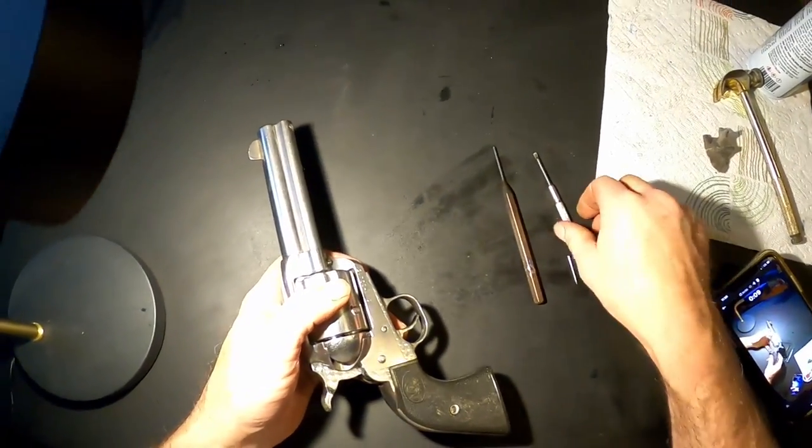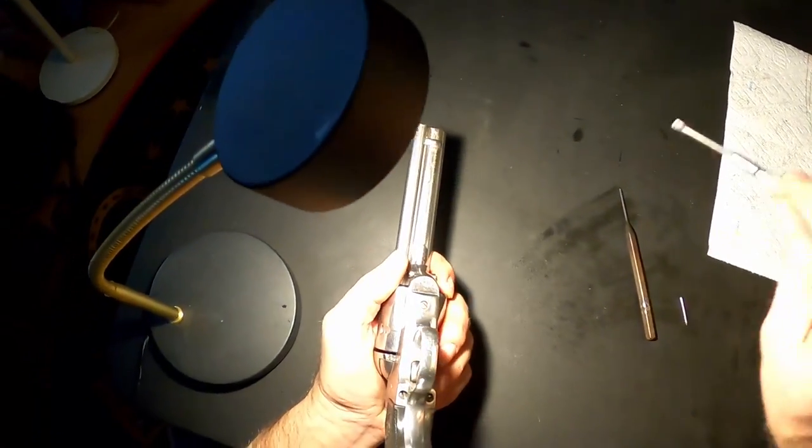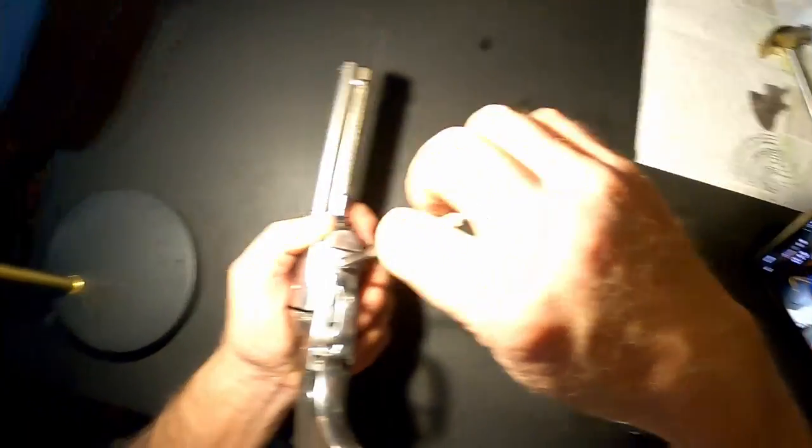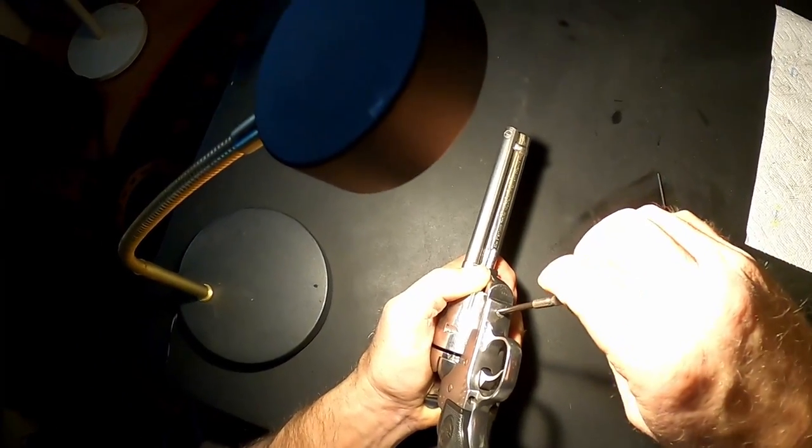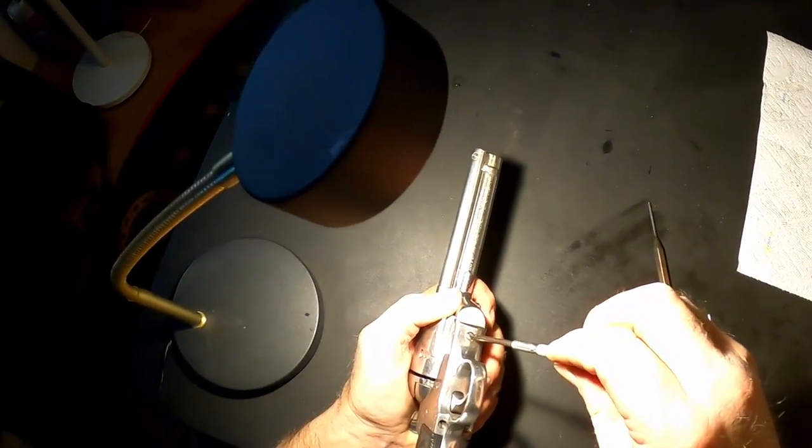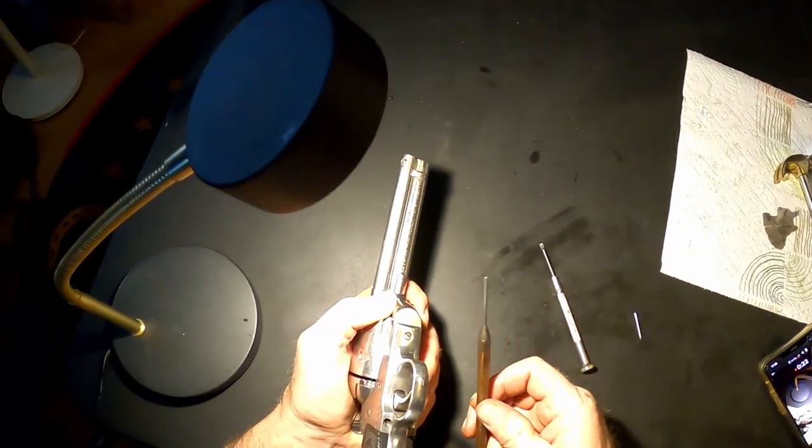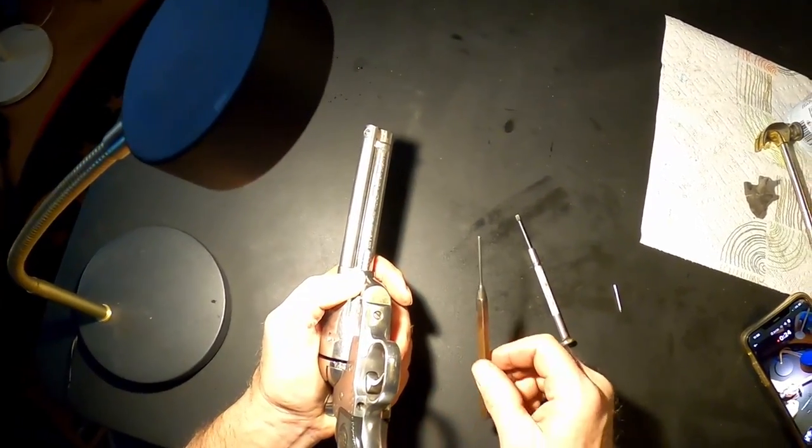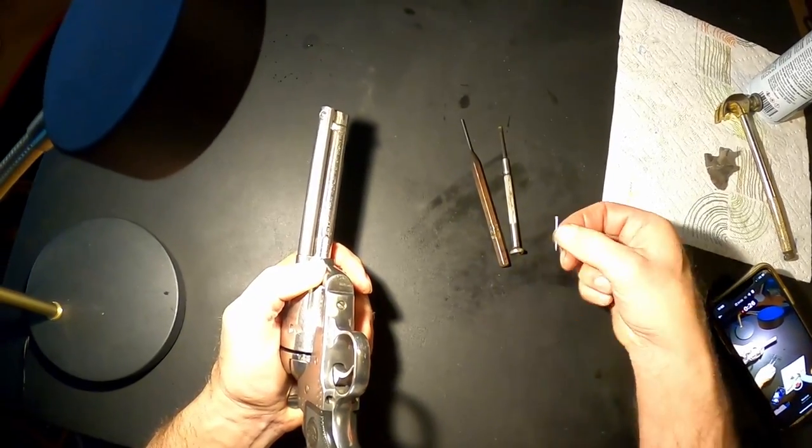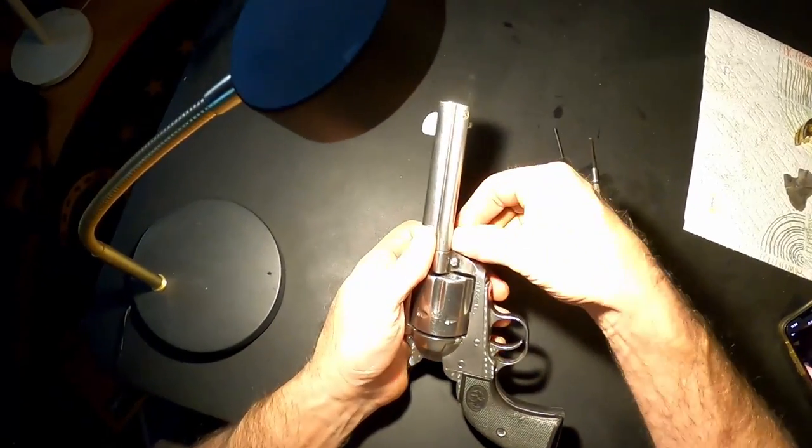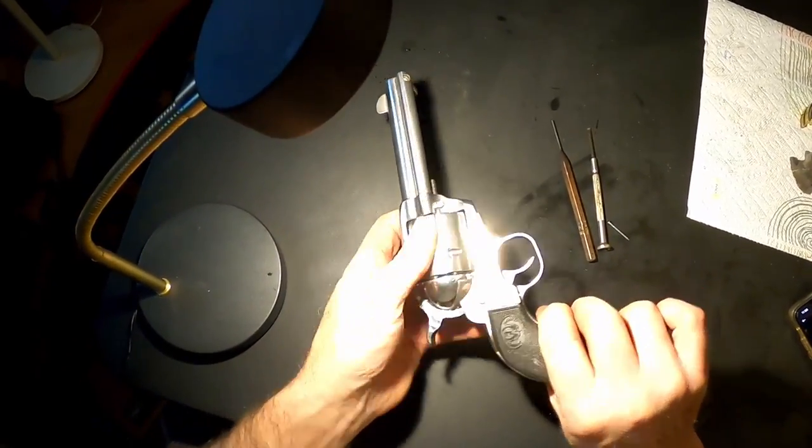We only need three tools. One is a screwdriver that is just the right size to fit these screws. If it's too big, it'll mar your frame, and if it's too small, you might damage the screw itself. So you want a screwdriver just the right size. You want a punch to punch our pins out and a little nail. So the first thing we'll do is make sure the gun is not loaded. Super.